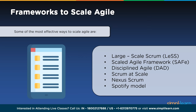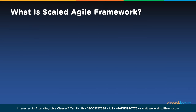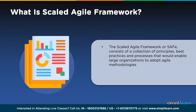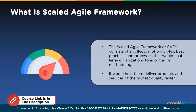The Spotify model is a people-driven, autonomous framework for scaling agile while emphasizing the importance of culture and network. It uses squads, tribes, chapters, and guilds — the squad being the foundation, acting like a scrum team. The Scaled Agile Framework (SAFe) consists of a collection of principles, best practices, and processes that enable large organizations to adopt agile methodologies to deliver products and services of the highest quality faster. SAFe is best suited for complex projects involving several large teams at the project, program, and portfolio levels.